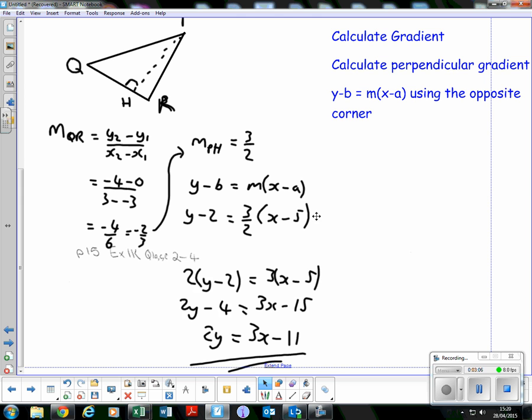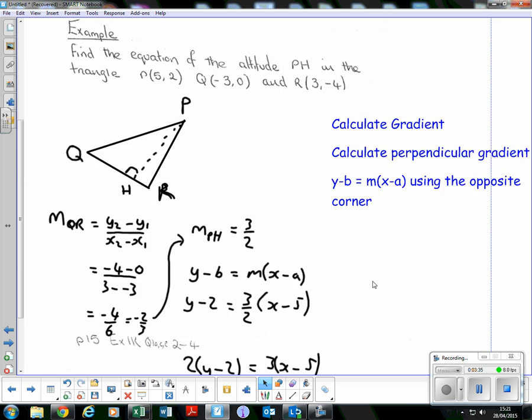As I've said in previous videos, we don't want to multiply out and get fractions. Try to avoid them if possible. Times everything on this side by two, so 2y minus 4 equals 3(x minus 5), which is 3x minus 15. Take the negative four across, becomes positive, so 2y equals 3x minus 11. And that's us, that's how to find the altitude.